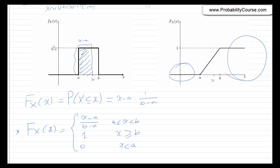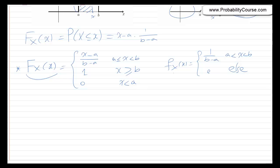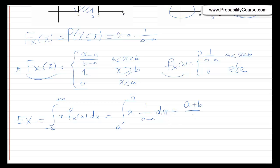So the CDF is: x minus a over b minus a for x between a and b; 1 for values larger than b; and 0 for values less than a. The PDF is f_X(x) equals 1 over b minus a for x between a and b, and 0 otherwise. Now let's find the expected value and variance. The expected value of X is the integral from minus infinity to infinity of x times f_X(x) dx, which in this case becomes the integral from a to b of x times 1 over b minus a dx, and this equals a plus b over 2.